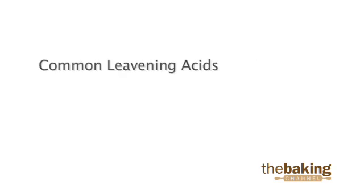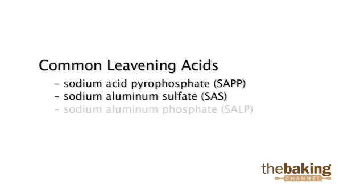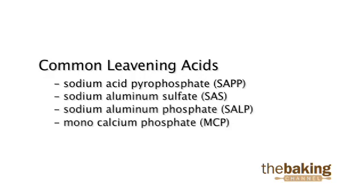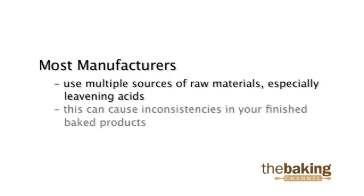Common leavening acids are sodium acid pyrophosphate, sodium aluminum sulfate, sodium aluminum phosphate, and monocalcium phosphate. Most manufacturers use multiple sources of raw materials, especially leavening acids, which can cause inconsistencies in your finished baked products.